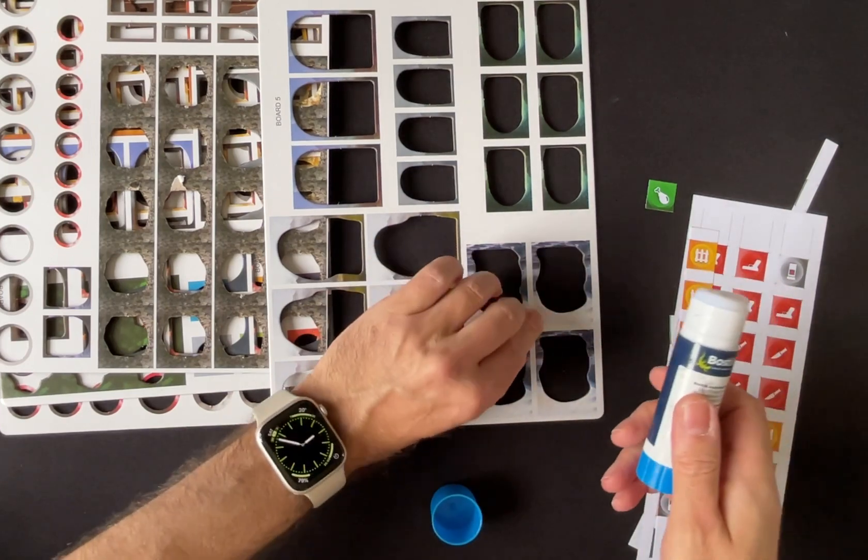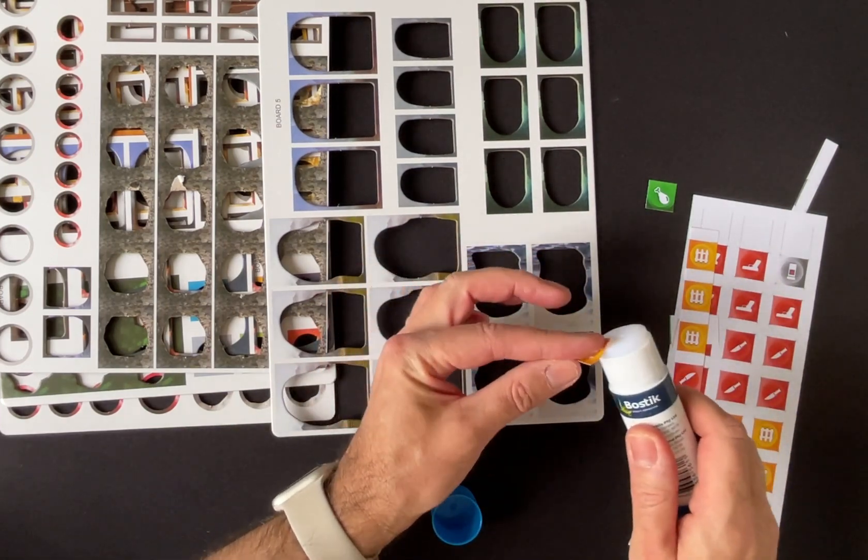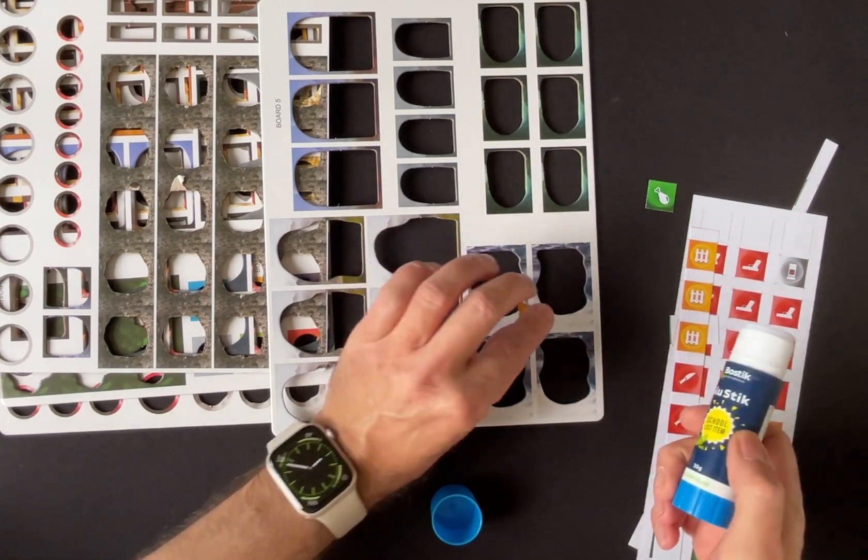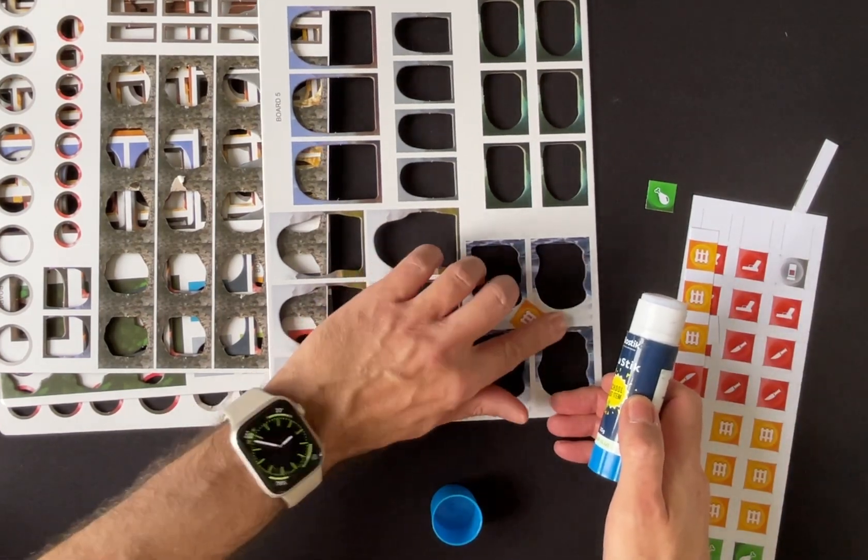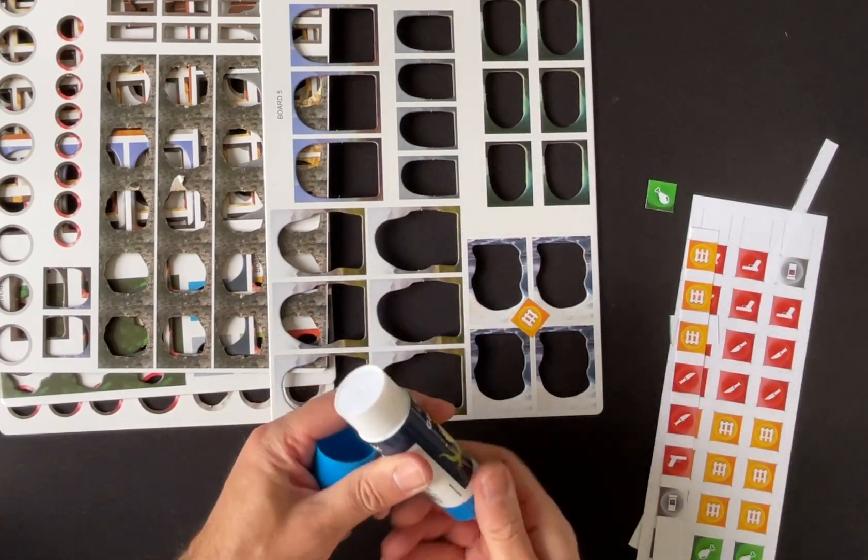And so you just get your glue stick, and you put a liberal amount of glue on this using this glue stick. And there we go, we've got a token on there. And we leave that to dry.